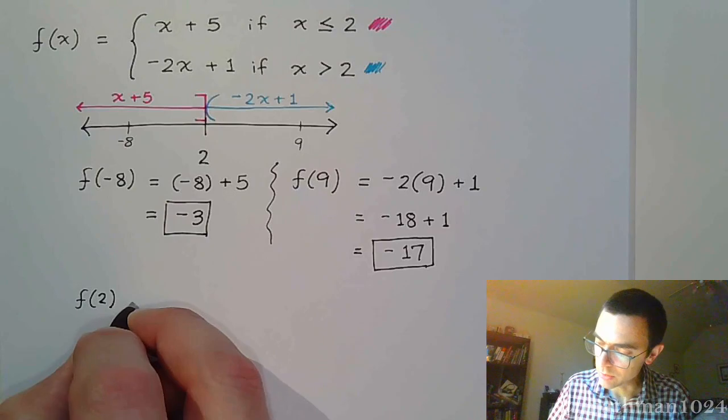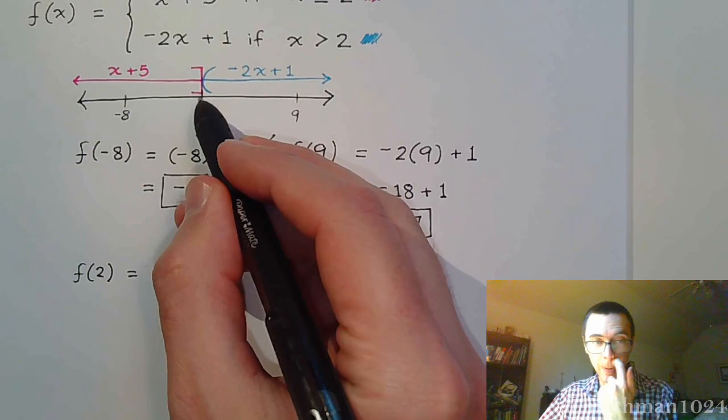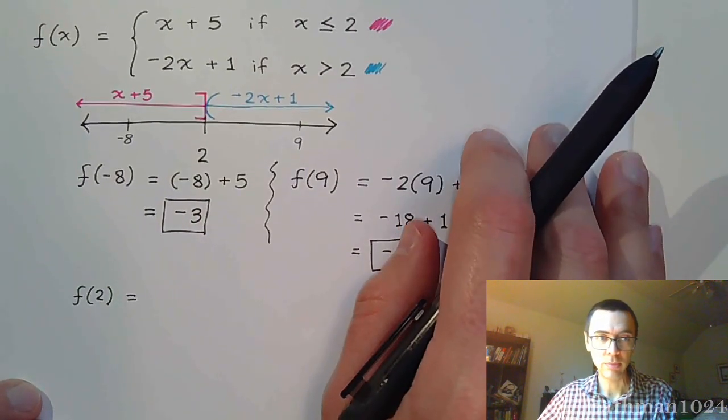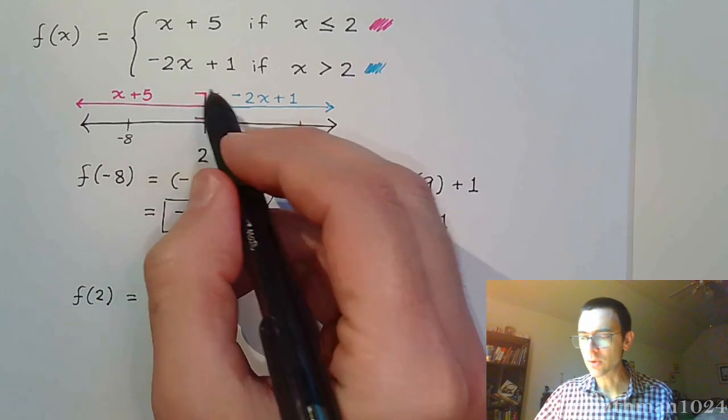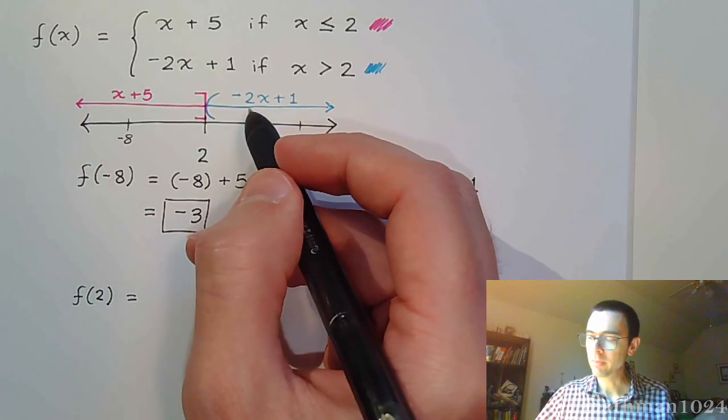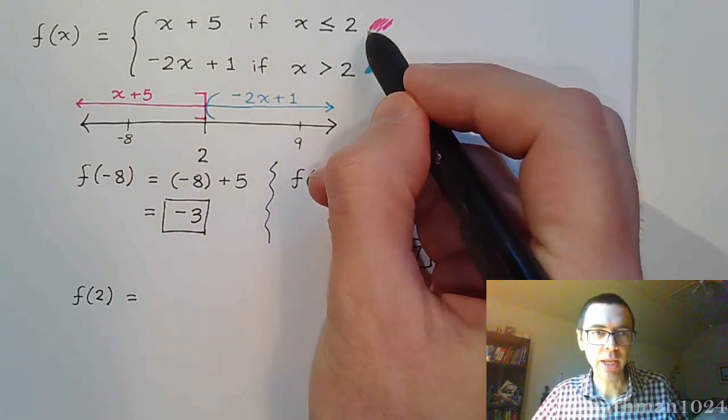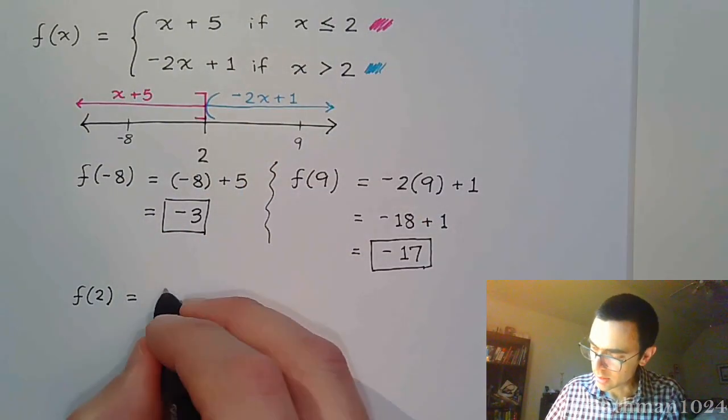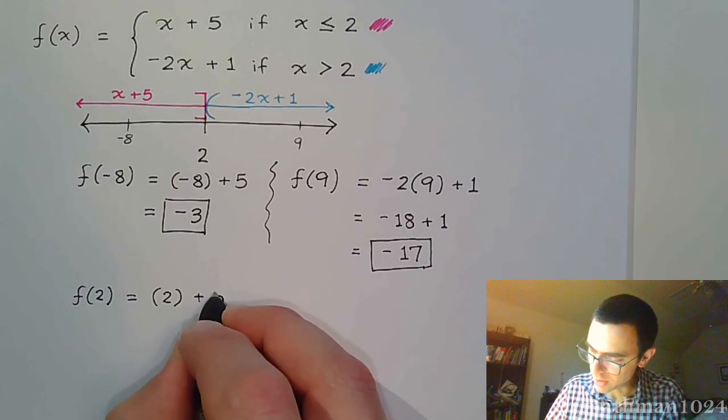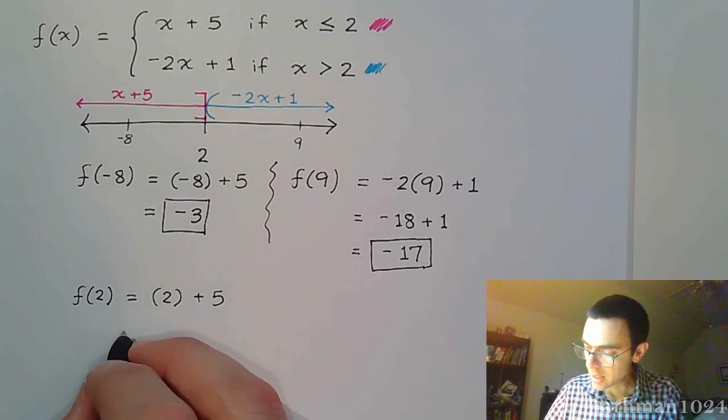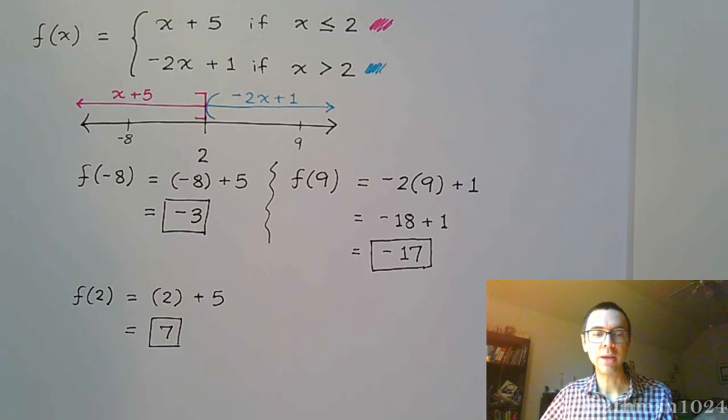And if I do f(2), see, f(2) lands right here. It's right here, so you have to figure out, is it in the pink or is it in the blue or is it nowhere? Well, since we are equal to 2, we plug it into the piece that allows us to be equal to 2, which is the first part. So we replace the x in the first part of that piecewise-defined function with 2, and we do the work, and we just get 7, like that.